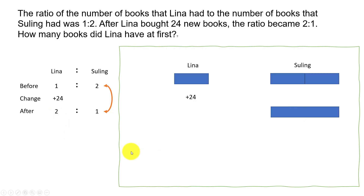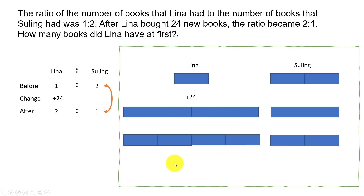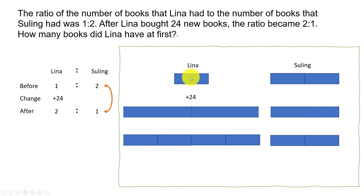Now Lena has two such units. If this is one unit of Su Ling, Lena should have two of them. So this one unit here is actually equivalent to two units. That means the before representation of one unit for Lena now becomes four units total. We can compare the after units with the before units because we know these two were equal. So the 24 extra books correspond to the additional piece shown here.